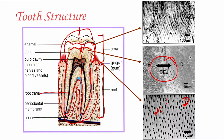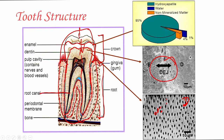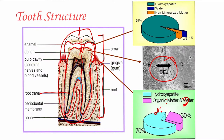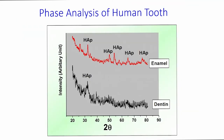These dentinal tubules are important because all these microstructural features give rise to specific mechanical properties. In terms of composition, enamel is largely hydroxyapatite — about 95% — with a little water and non-mineralized matter. Dentine is 70% hydroxyapatite and 30% organic matter such as proteins. If you take separate parts of enamel and dentine and do X-ray diffraction, there is a very clear indication of a crystalline hydroxyapatite phase.